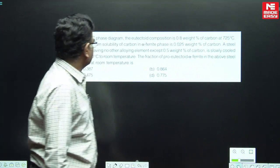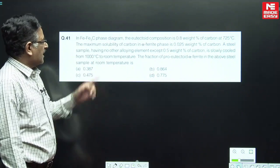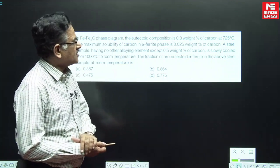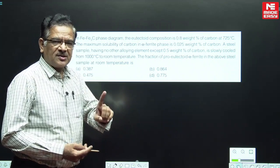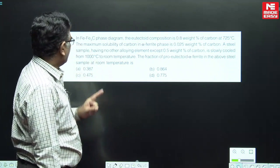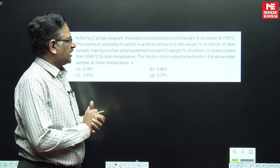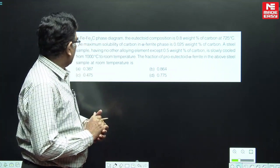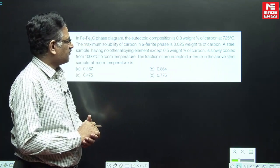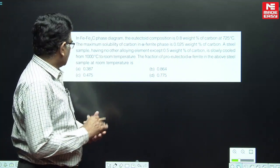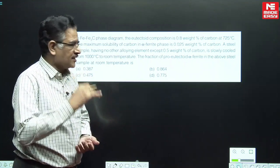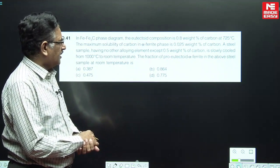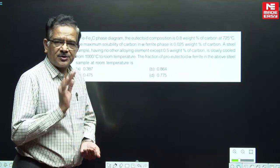In the iron iron-carbide phase diagram, the eutectoid composition is 0.8 weight percentage of carbon at 725 degrees centigrade. The eutectoid temperature and composition are given, and the maximum solubility of carbon in the alpha ferrite phase is 0.025 percent by weight. A steel sample having no other alloying element except 0.5 weight percentage of carbon is slowly cooled from 1000 degrees centigrade to room temperature. What is the fraction of pro-eutectoid alpha ferrite in the above steel sample at room temperature?